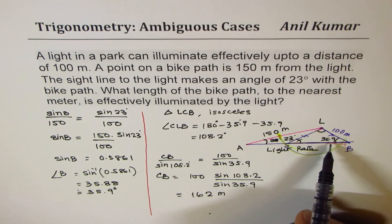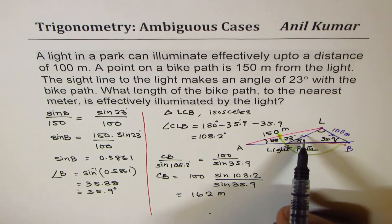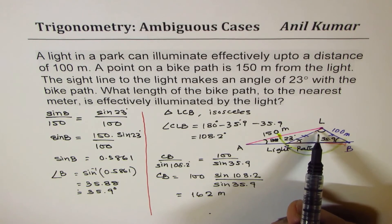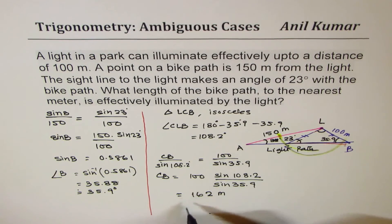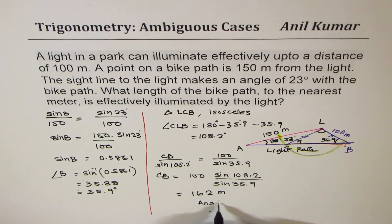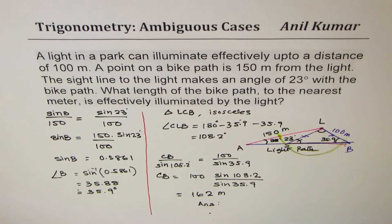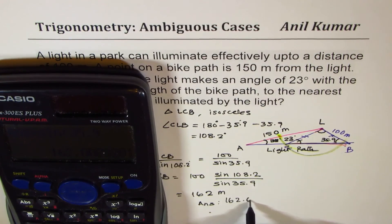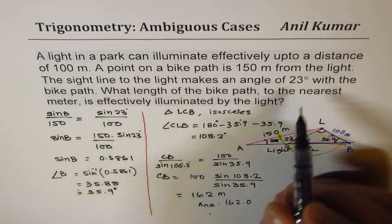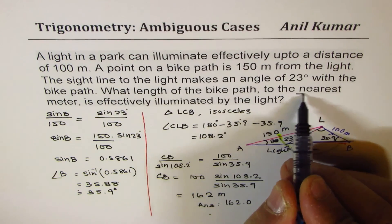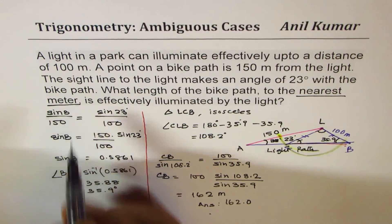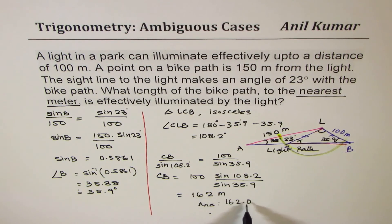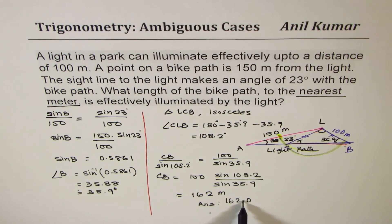As you can see, opposite the 35.9 degree angle it is 100, so with this much bigger angle of 108.2 degrees we do expect a larger value. Our answer is: the path illuminated — to the nearest meter — is 162 meters.